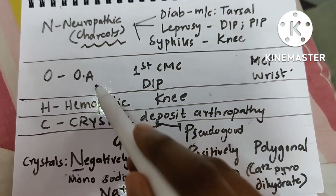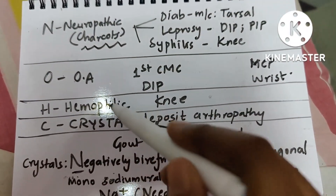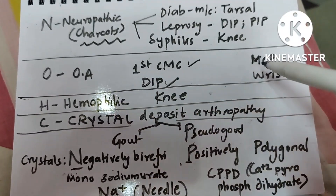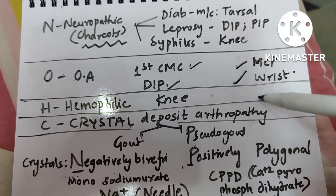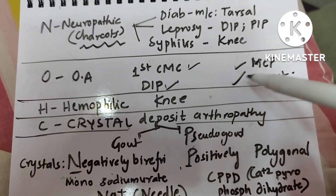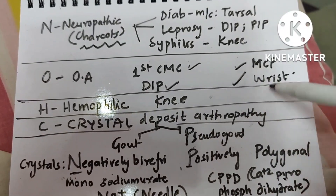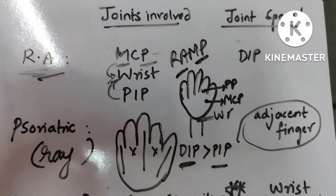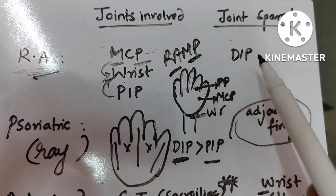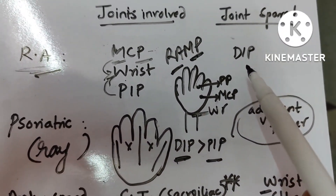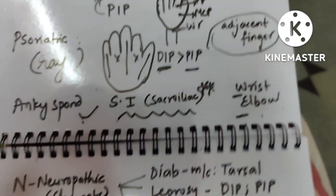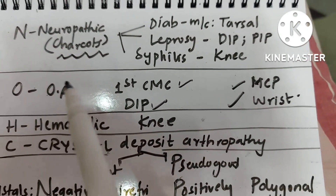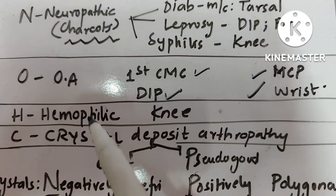In osteoarthritis, the most common joints involved are the first CMC and DIP, whereas MCP and wrist are spared. This is exactly the reverse of rheumatoid arthritis, where MCP and wrist are commonly involved and DIP is spared. So osteoarthritis and rheumatoid arthritis are opposite in their joint involvement patterns.